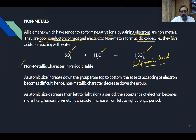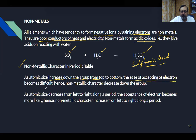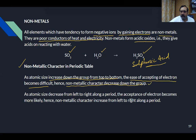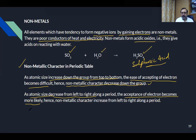Going down a group, atomic size increases, so metallic character increases and therefore non-metallic character decreases. Going left to right across a period, atomic size decreases, acceptance of electrons becomes more likely, and non-metallic character increases from left to right.